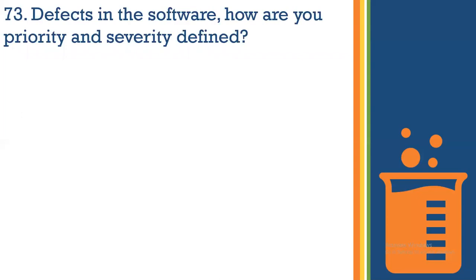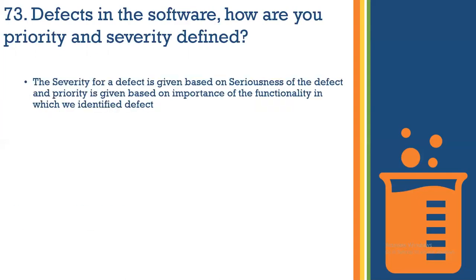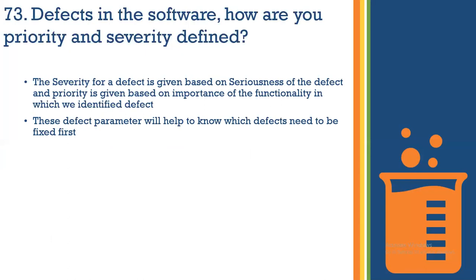How are priority and severity different for a defect? Severity for a defect is given based on the seriousness of the defect. Priority is given based on the importance of the functionality in which we identify the defect. Severity is about how much impact the defect has on test execution activities, while priority is about how important the functionality is. This defect parameter helps to know which defect needs to be fixed first.